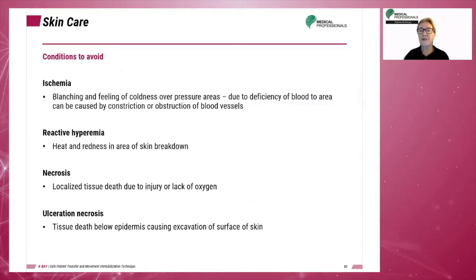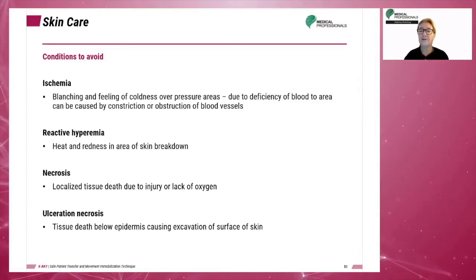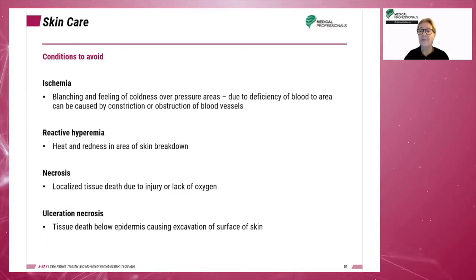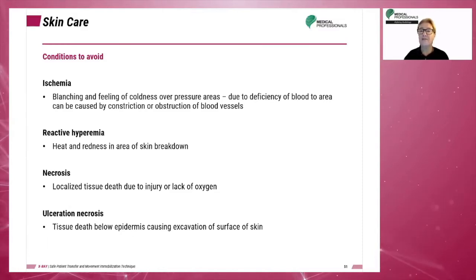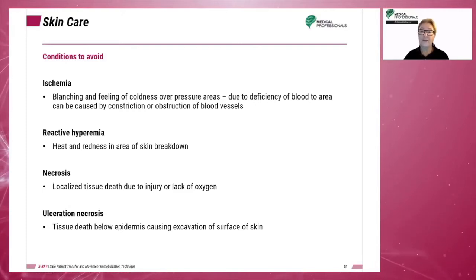Technologists should be aware of the following conditions. Ischemia is the blanching and feeling of coldness over pressure areas. These can be on the heel, coccyx, elbows, and the buttocks. It is caused by a deficiency of blood to an area, which can lead to the constriction or obstruction of blood vessels.